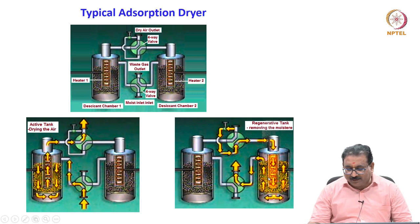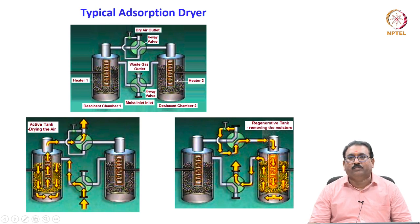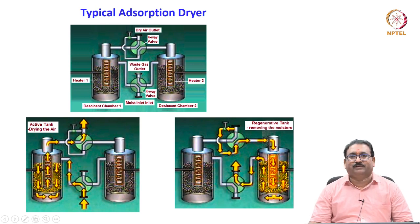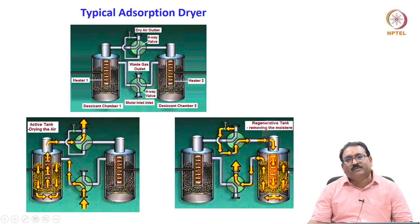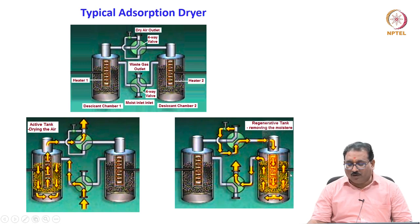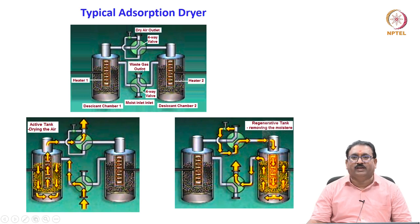Please note that heaters are provided in each desiccant bed — heater 1 and heater 2 — and these heaters are on only when regeneration is taking place. The active tank dries the compressed air and the other is used for regeneration, meaning removing the already contaminated bed. The middle outlet is the waste gas outlet through which hot air exits. The moist air inlet and dry air outlet are on the sides, while the middle one is used for the waste gas outlet.